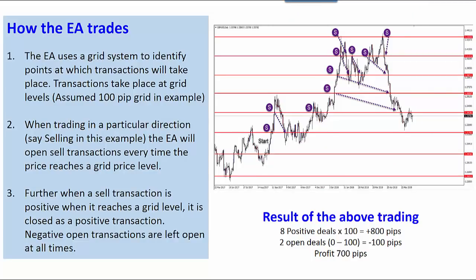The EA works on a grid system. On your screen you can see a chart with a grid system placed over it - basically just price levels separated by the same distance all the time. In this case we're assuming those price levels to be roughly a hundred pips.